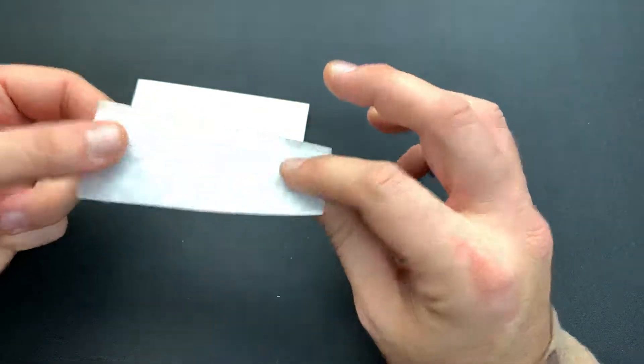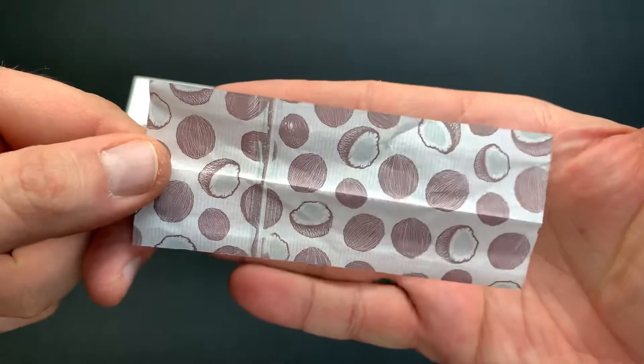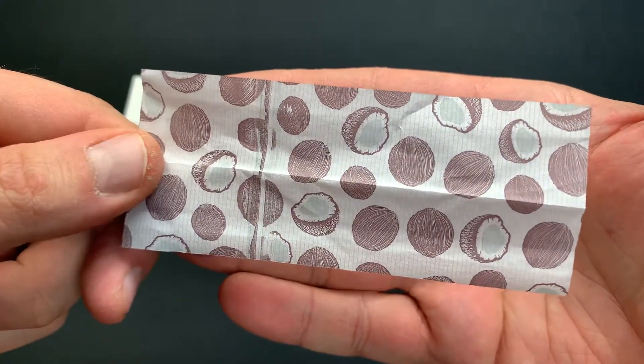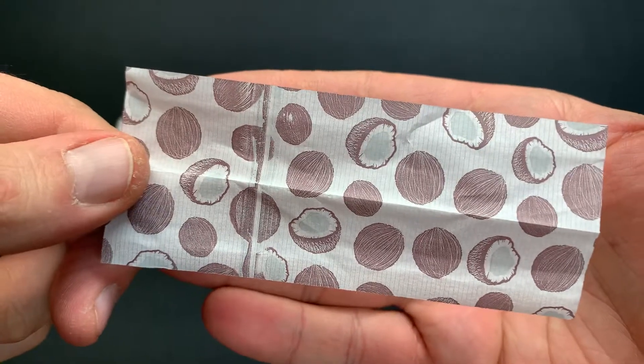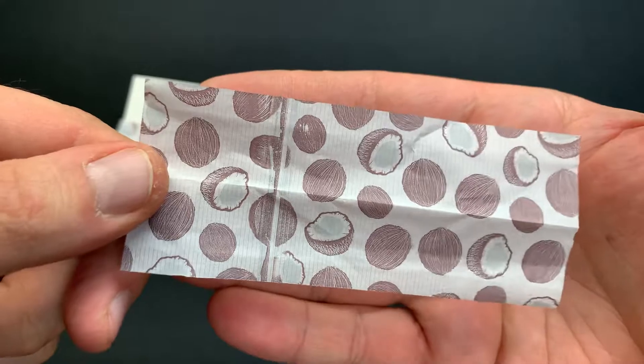And then we have the papers themselves which actually to be honest with you, this is probably the best design yet that Hornet has put out on a paper. Look at the detail of the skin of those coconuts. Look at the inside, the meat of those coconuts. That is some nice printing on this particular paper.